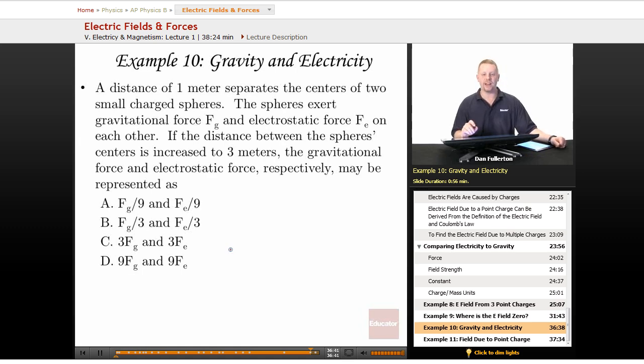All right, let's take a look at an example where we look at gravity and electricity. A distance of one meter separates the centers of two small charged spheres. The spheres exert gravitational force Fg and electrostatic force Fe on each other.